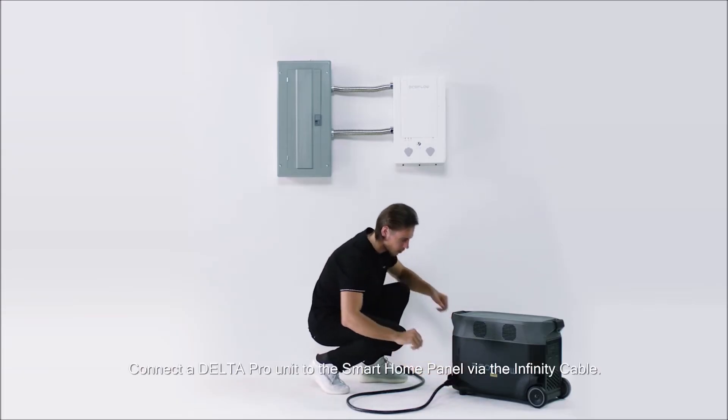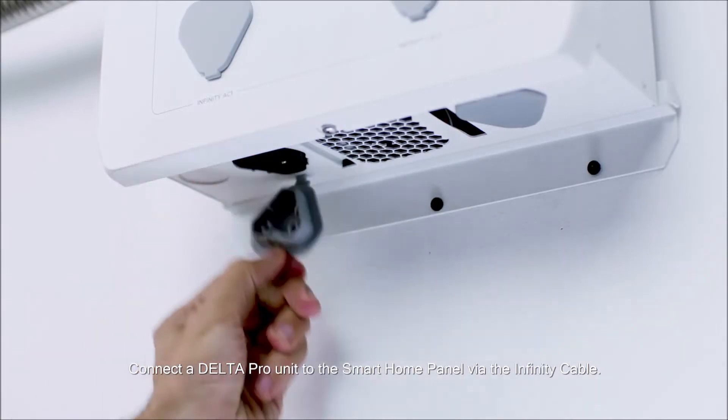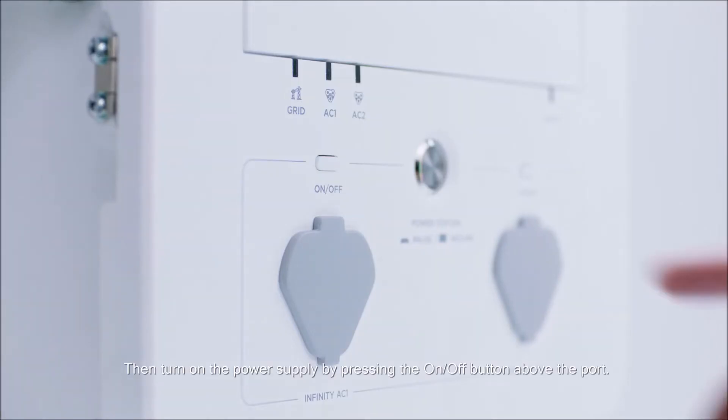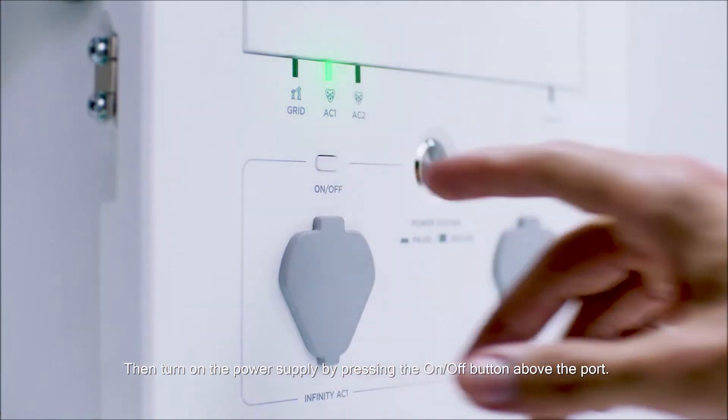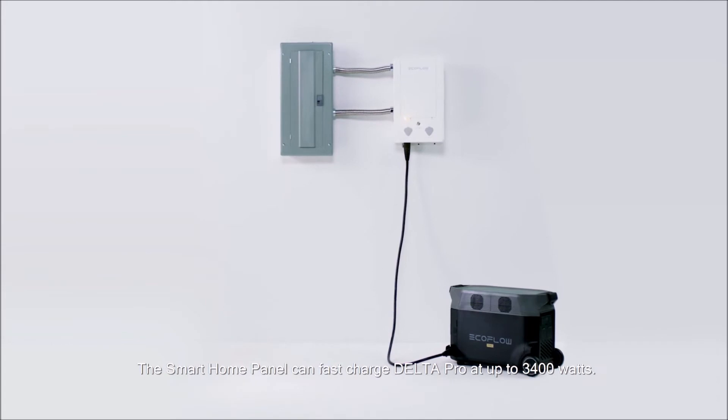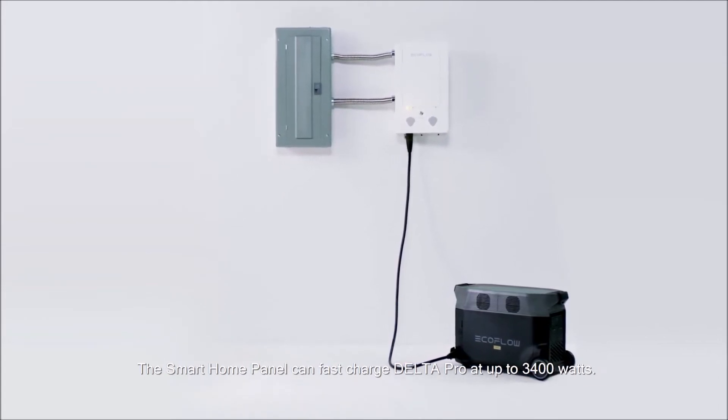Connect a Delta Pro unit to the smart home panel via the infinity cable. Then turn on the power supply by pressing the on off button above the port. The smart home panel can fast charge Delta Pro at up to 3400 watts.